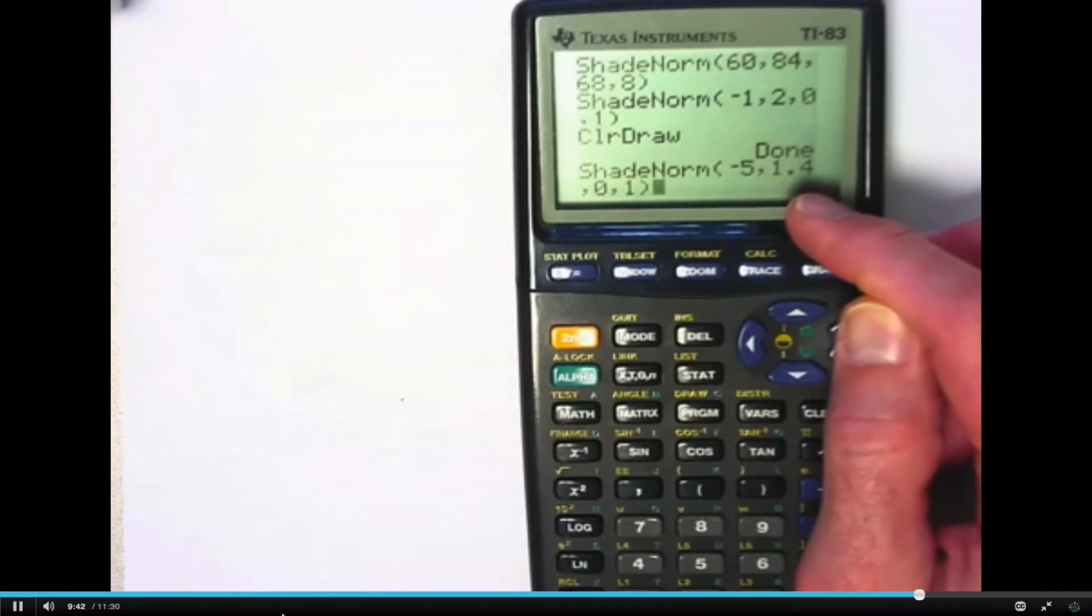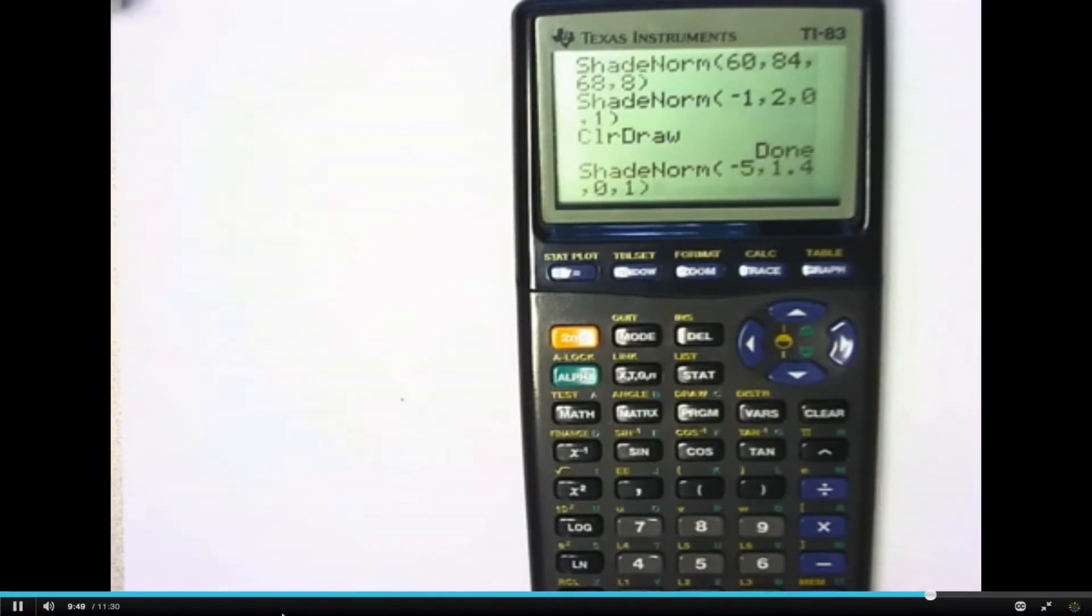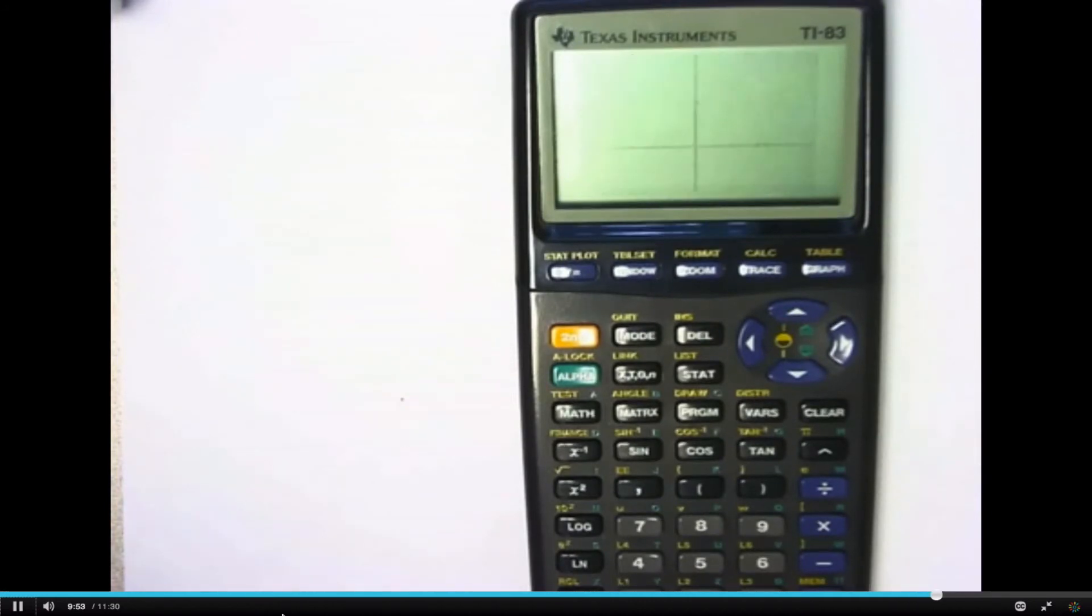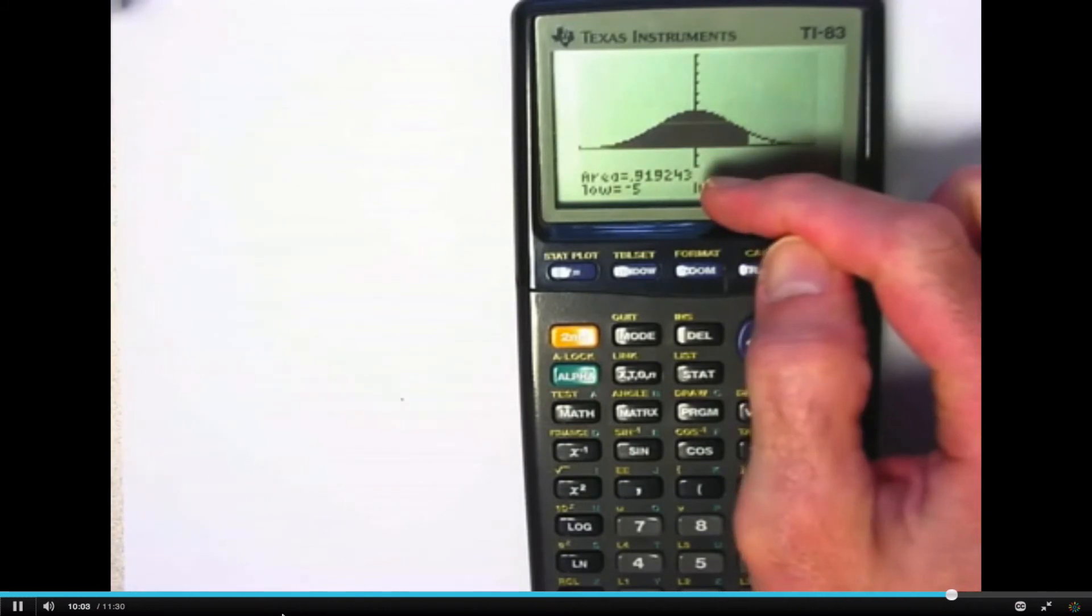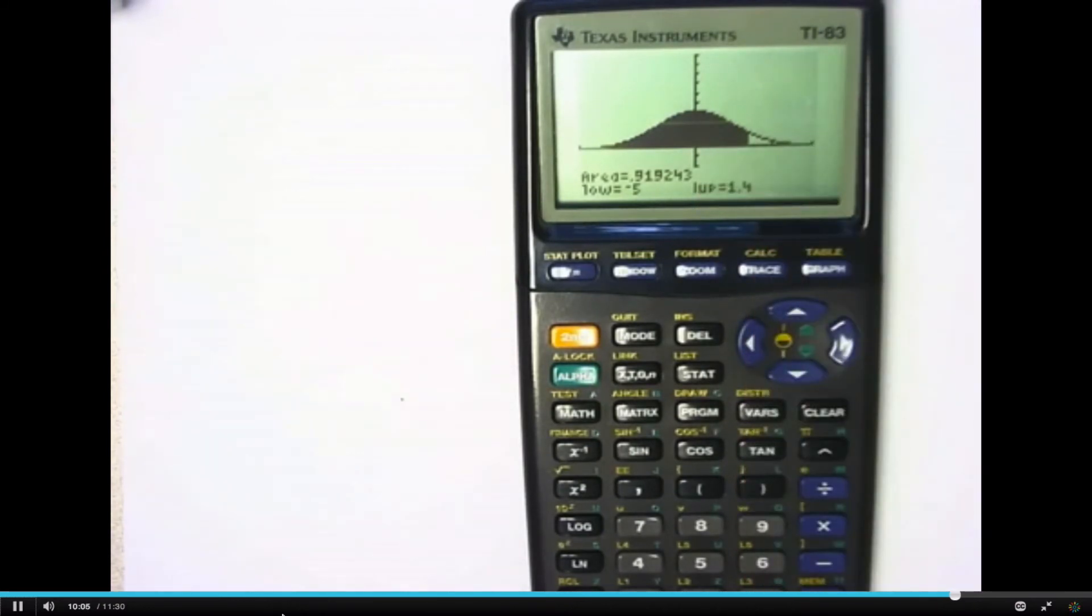Effectively, what we're after here is the area under the curve from 1.4 on down to the left of 1.4. It should be very close to 0.92. Let's see if it is. Yeah, very close to 0.92. So, effectively a z-score of 1.4 is effectively at the 92nd percentile.